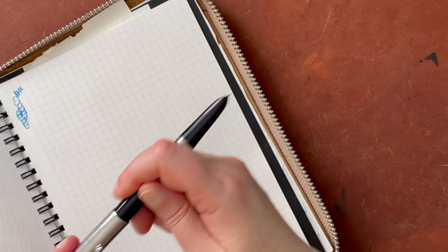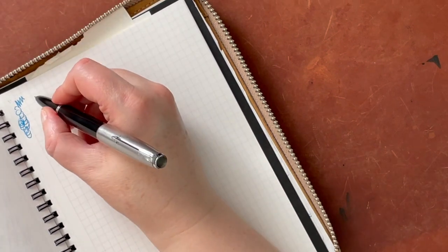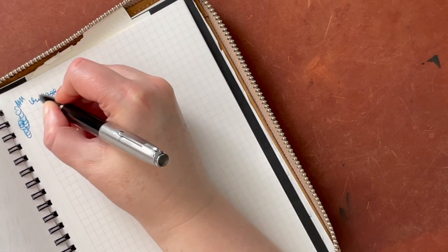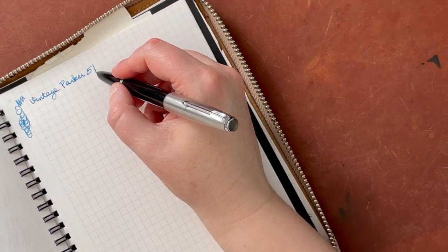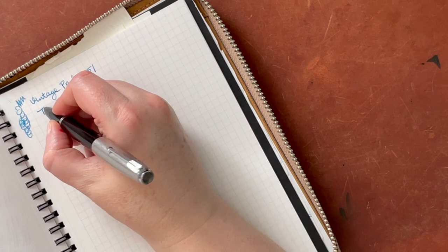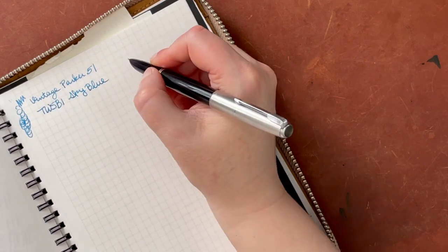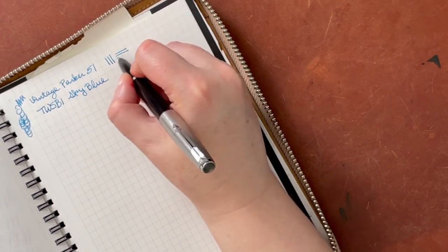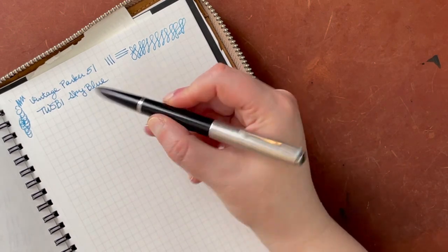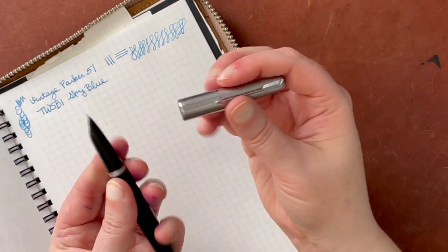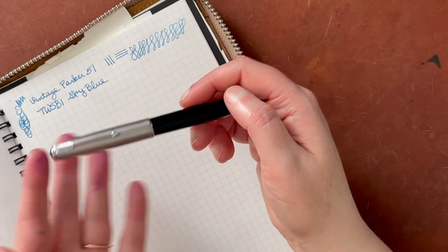We will be able to do a writing sample on that one today. So this one posts and it posts very securely and is very comfortable, this vintage one. So this is a vintage Parker 51, and I cannot remember what ink... actually no, I can remember, this is Twisbi Sky Blue. And it looks a little darker than Twisbi Sky Blue normally looks because there probably was some tainting of the ink with a darker ink that was already in this pen.